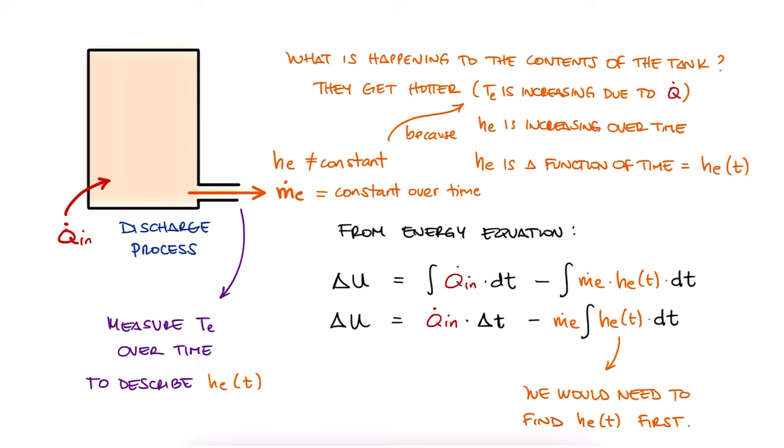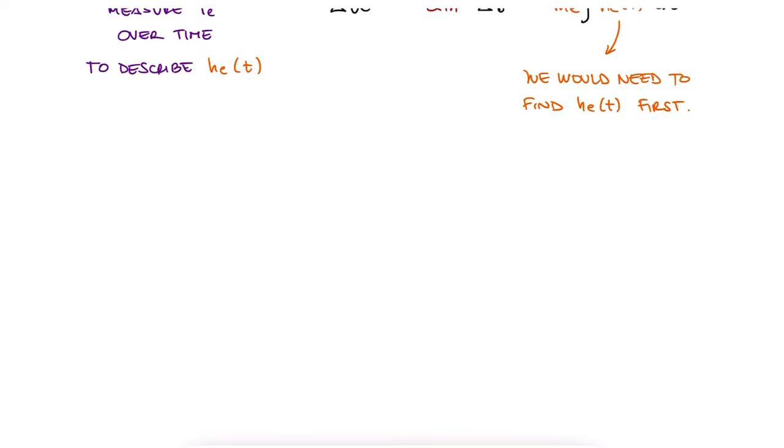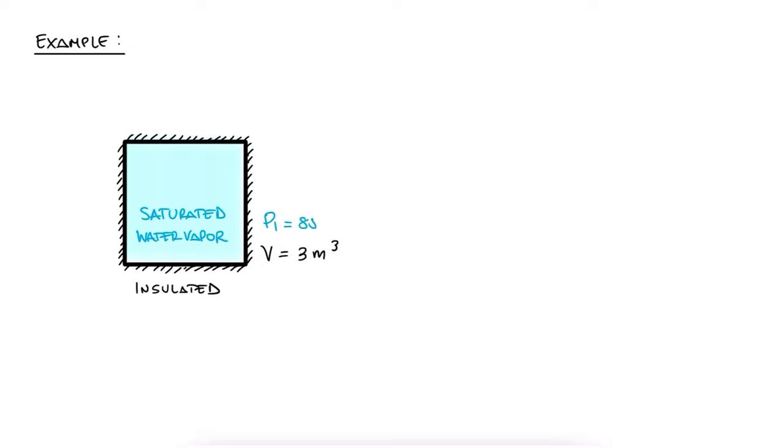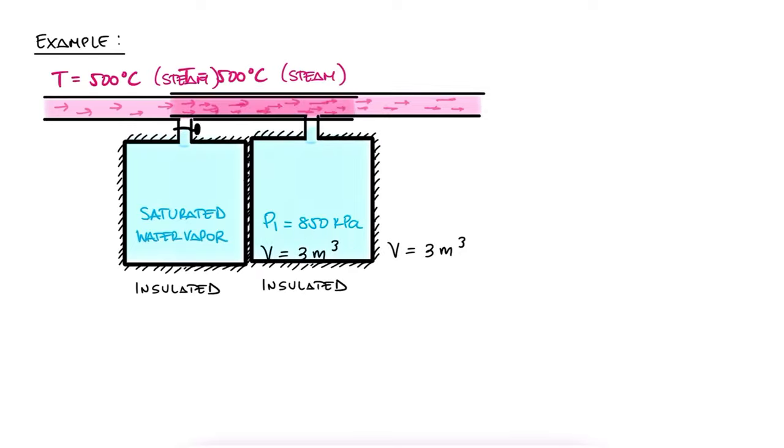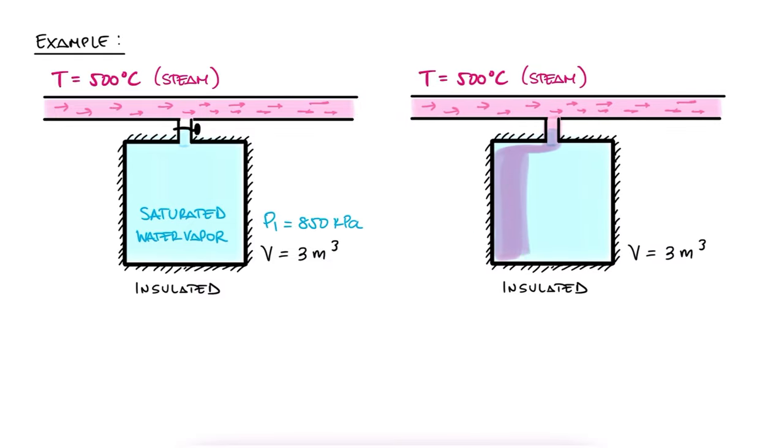But in general, the concept is the same for all scenarios, so let's look at a simple one where we make use of what we learned here. A 3 cubic meter rigid insulated tank initially containing saturated water vapor at 850 kilopascals is connected through a valve to a supply line that carries steam at 500 degrees celsius. Now the valve is opened, and steam is allowed to flow slowly into the tank until the pressure in the tank rises to 1.8 megapascals.